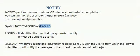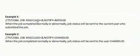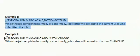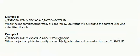When you specify &SYSUID, the system replaces &SYSUID with the user ID from which the job was submitted, and notifies the message to the current user who submitted the job. In the first example, &SYSUID is used, so when the job completes normally or abnormally, the job status is sent to the current user. In the second example, NOTIFY equal to CHANDUID is given, so the status is sent to that specific user ID.